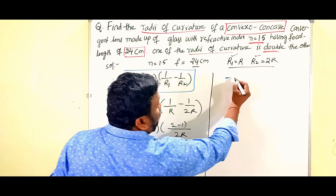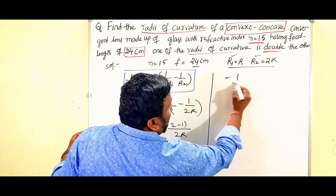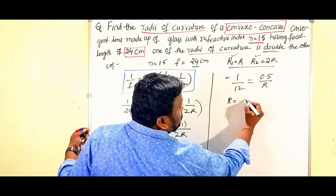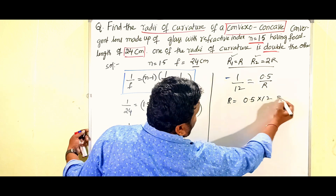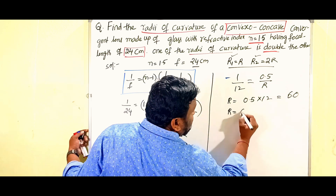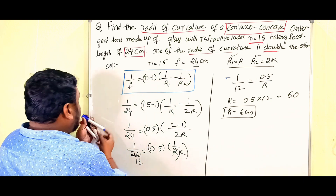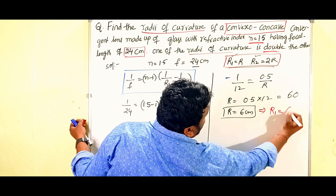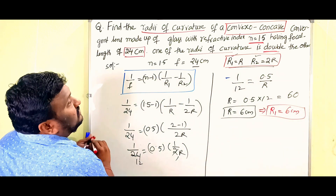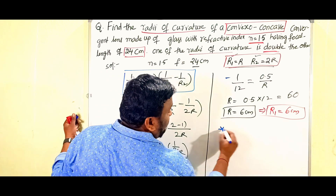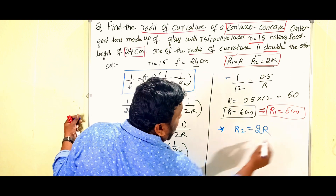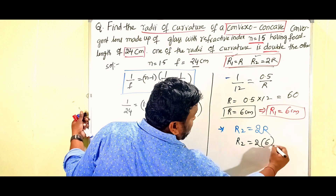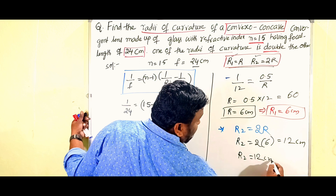From 1/12 = 0.5/r, cross-multiplying gives r = 0.5 × 12 = 6.0. Therefore r = 6 centimeters. Since we took r1 = r, therefore r1 = 6 centimeters. And since one radius of curvature is double the other, r2 = 2r = 2 × 6 = 12 centimeters. Therefore r2 = 12 centimeters.